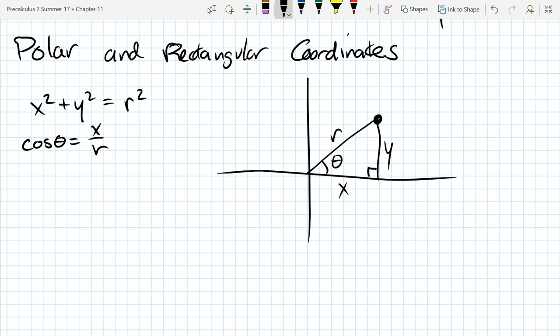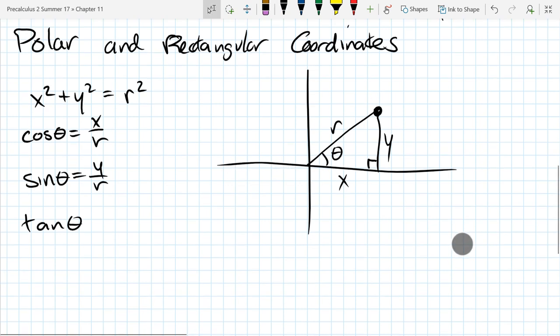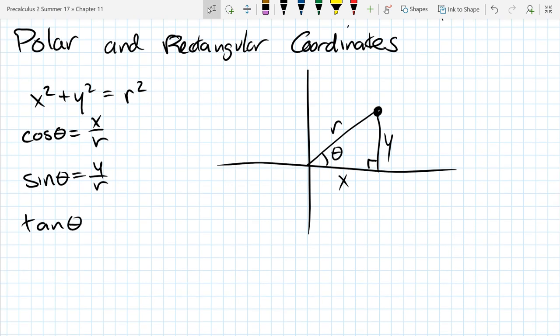And sine, really similar except it's opposite over hypotenuse. And last—well, there are three more trig functions you could write down, but they're not going to be as useful as these—so tangent is y over x.